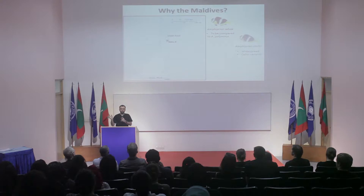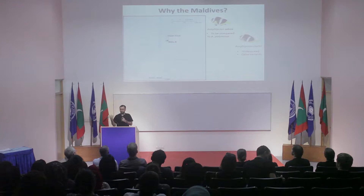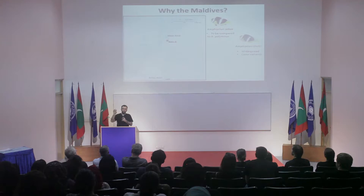Amphiprion clarkii is very interesting for two main reasons. First, it is very widespread — the only species of clown fish you can find almost everywhere in the West Pacific. And depending on the region, it can present interesting variations in coloration that we don't really know why. So it would be a good candidate to investigate how geography is shaping local variations.